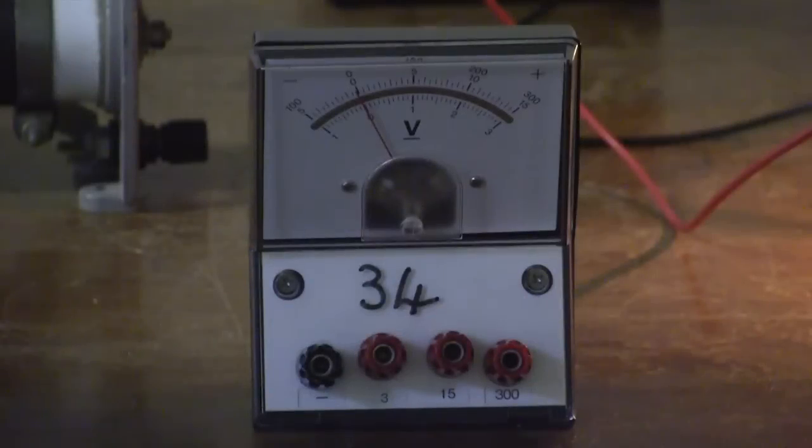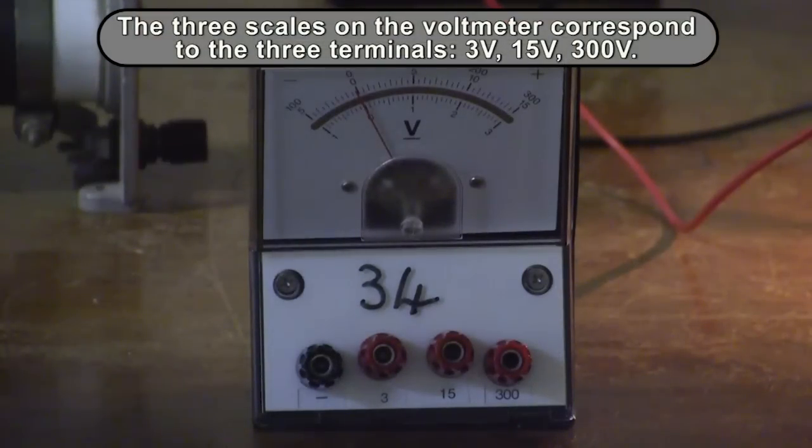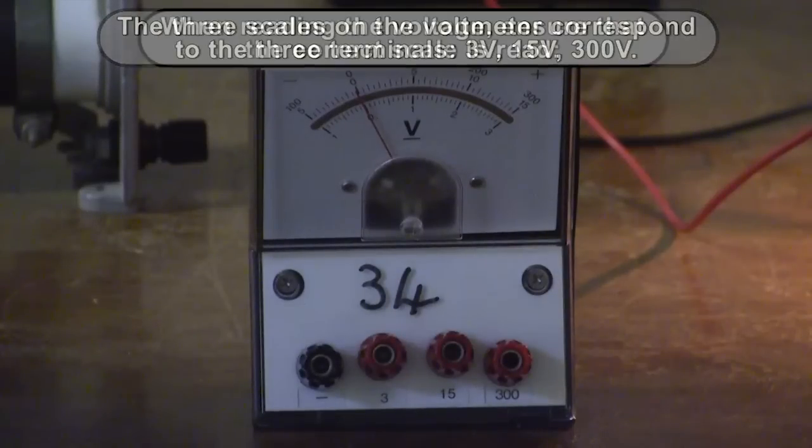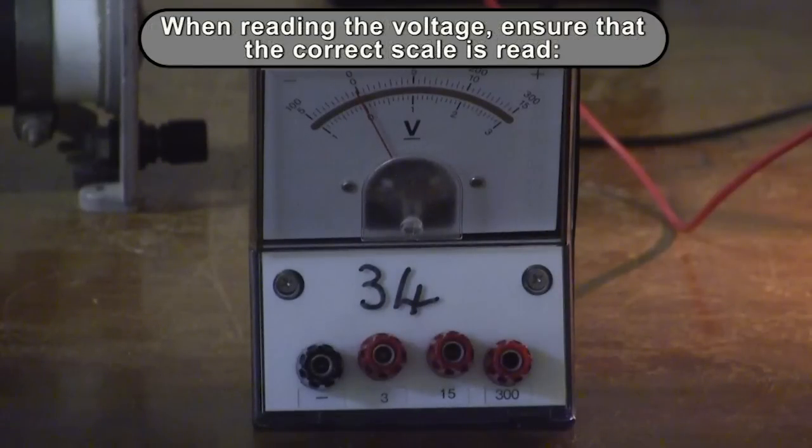The three scales displayed on the voltmeter correspond to the three positive terminals: 3 volts, 15 volts, and 300 volts. When reading the voltmeter, ensure that the correct scale is read.